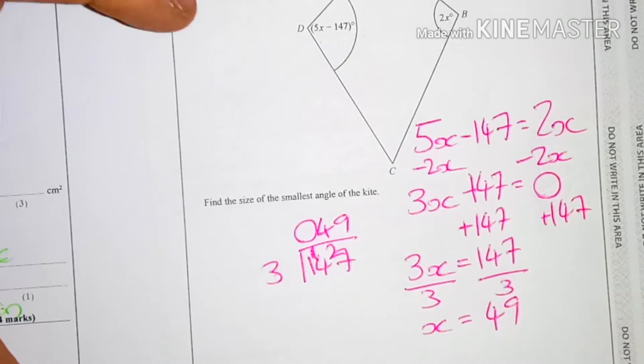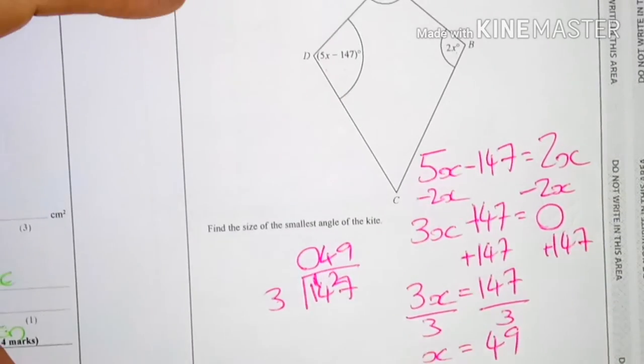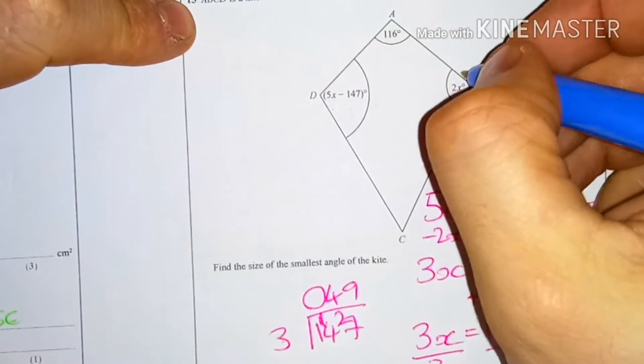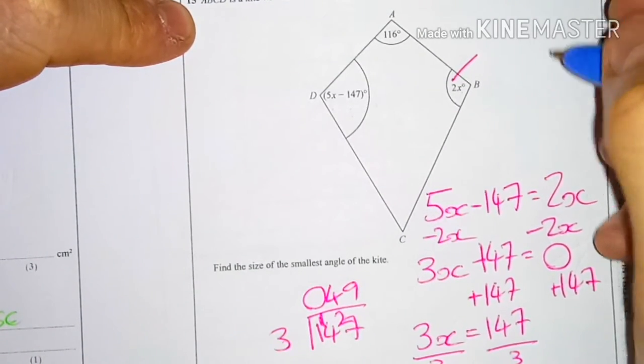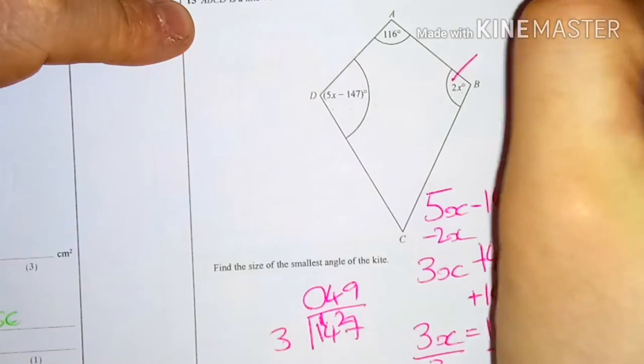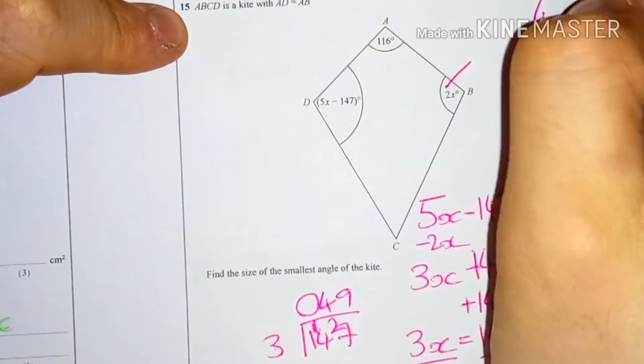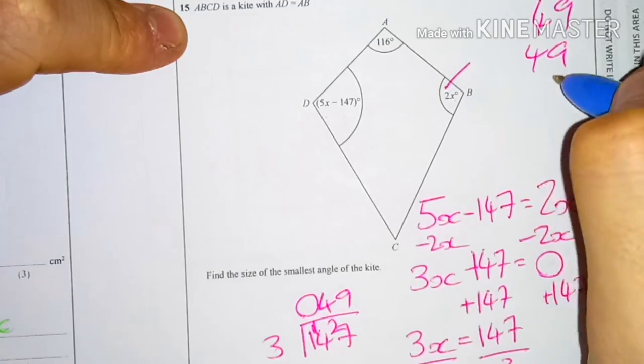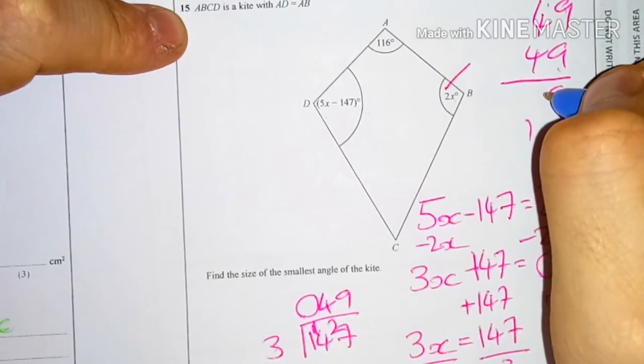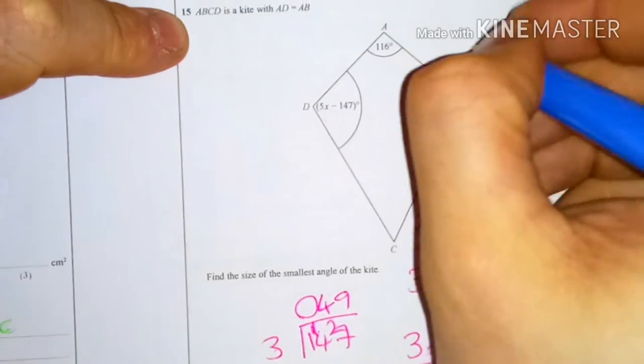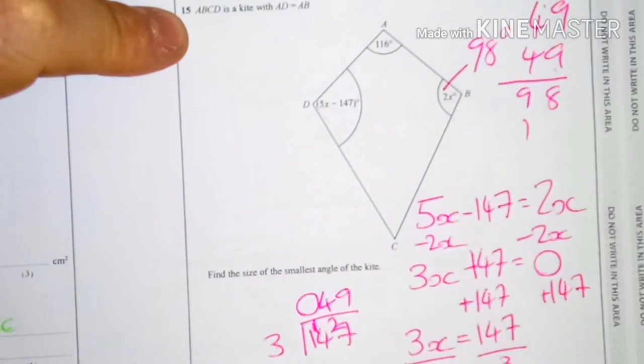So my x is 49. Now if we go back up to my shape, this actually then goes on to say this angle here is 2 times 49. I'll do it the long way to make sure it's right. 49 plus 49: 9 plus 9 is 18, carry the 1. 4 plus 4 is 8, plus 1 is 9. So this is 98 degrees.